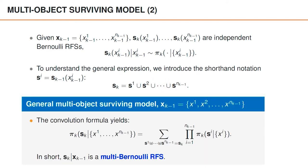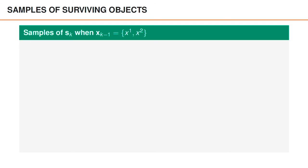We can now present a general model for the surviving objects when the set of objects at time k-1 is x1 to x nk-1. The convolution formula gives that the distribution of the set sk given xk-1 is the sum over all combinations of disjoint sets s1 to s nk-1 whose union is sk, of the product over the single object motions boldface pi k of si given xi, where xi is the corresponding state at time k-1. We can also see that sk given xk-1 is a multi-Bernoulli random finite set. As usual, it can be easier to make sense of multi-Bernoulli random finite sets by looking at its parameters instead of these summations over disjoint subsets.